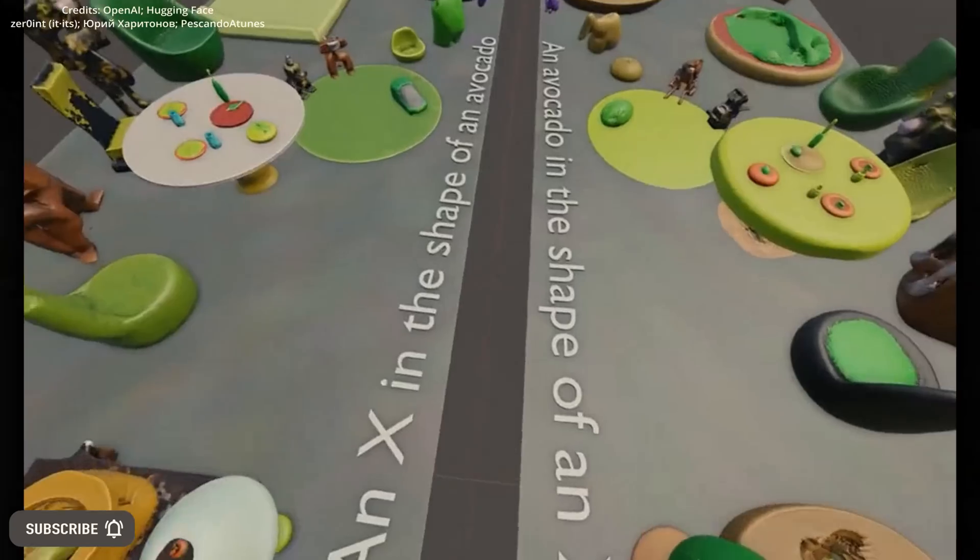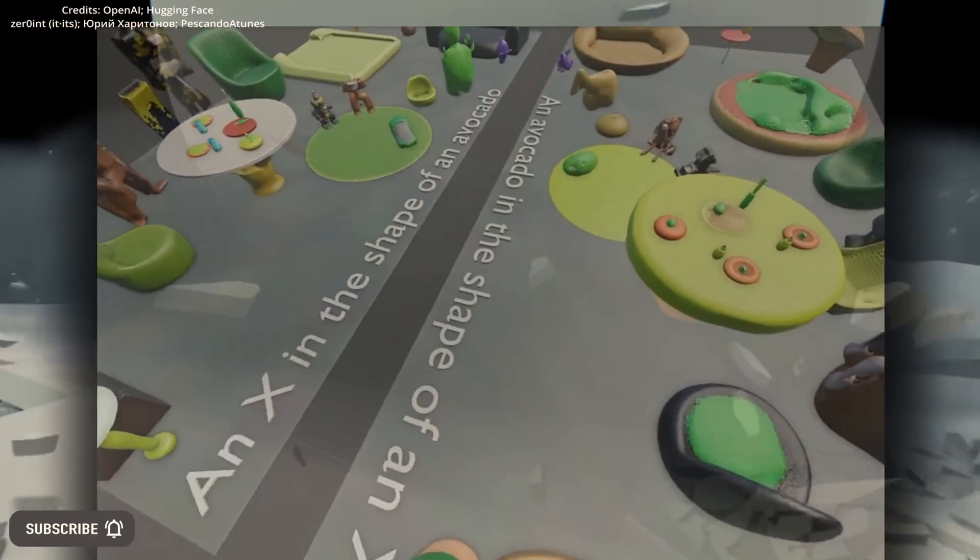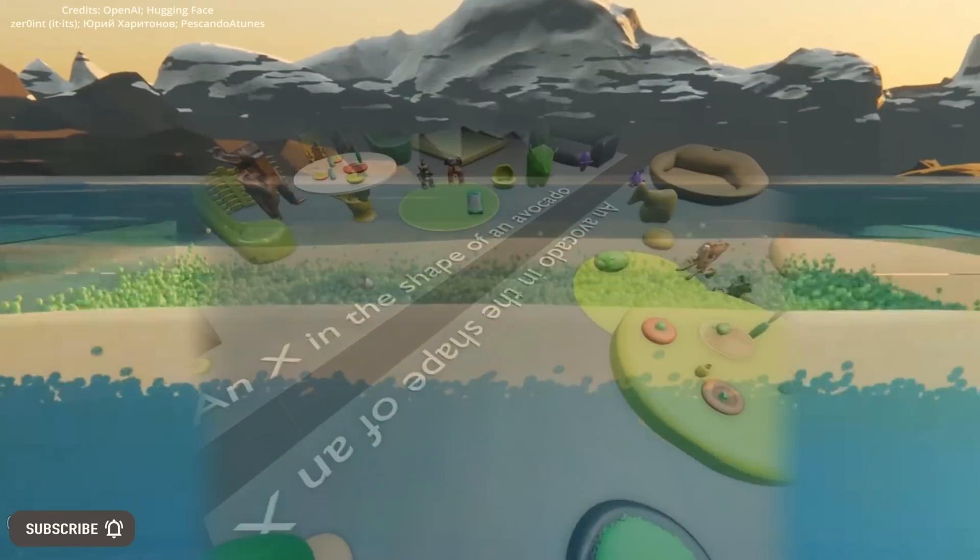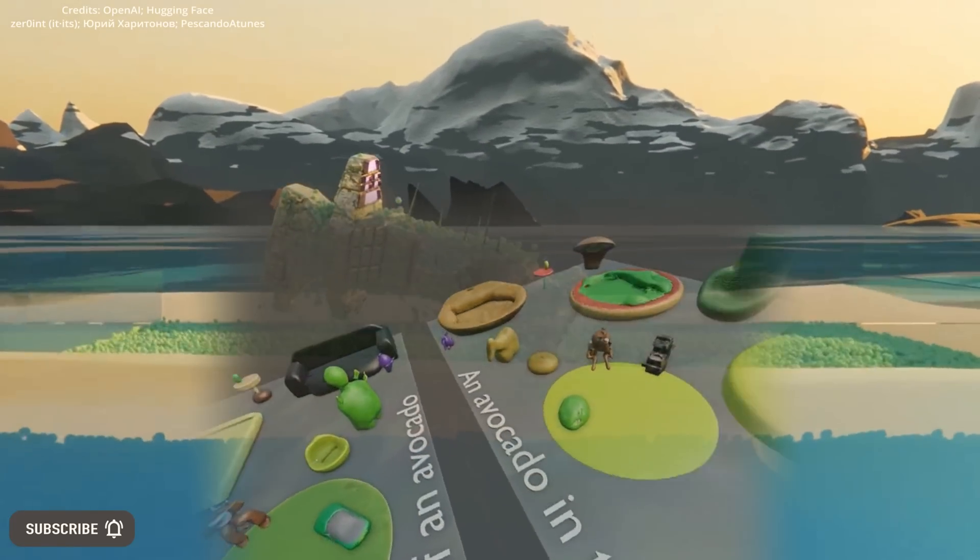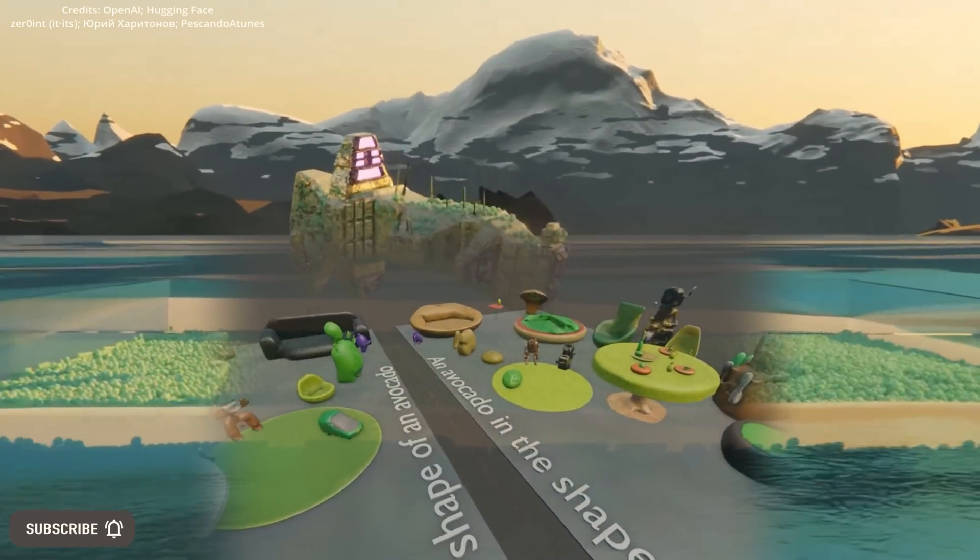This year, OpenAI has garnered significant attention for its DALI-2 text-to-image software, which, similar to StableDiffusion and MidJourney, can create realistic or imaginative images from descriptive text.